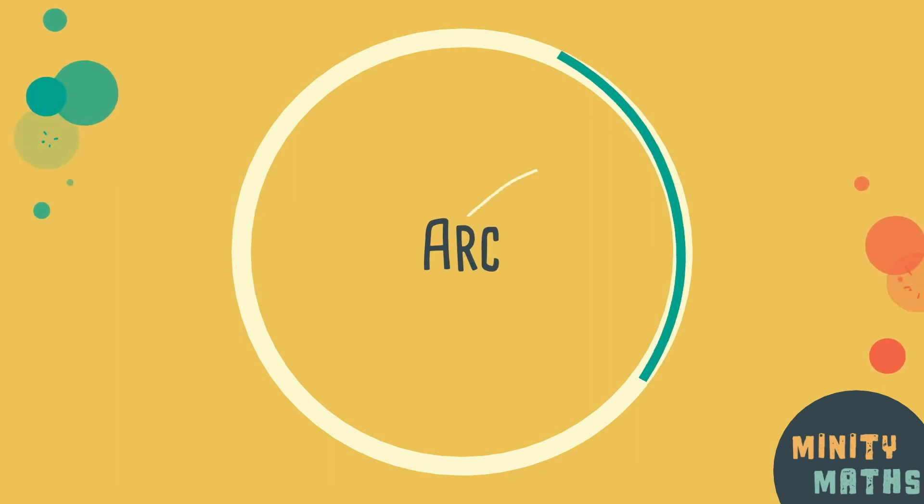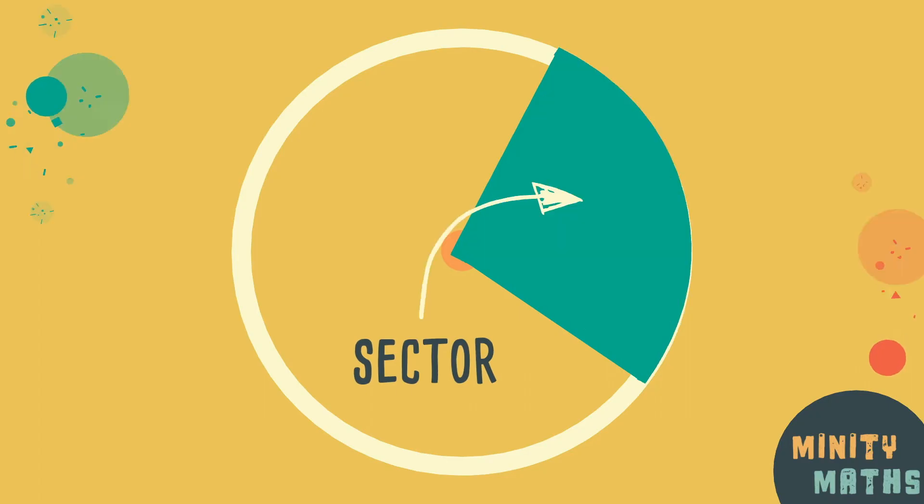An arc is just part of the circumference. And a sector is formed when two radii meet the arc.